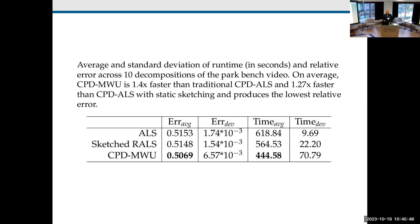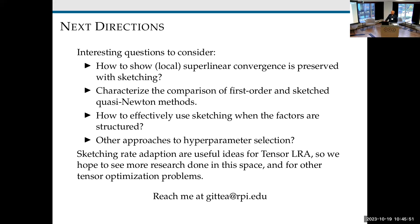The takeaway from the talk is those two things. Some interesting open questions: there's a gap in going from the second-order quasi-Newton update to a gradient update — can we show that at least local superlinear convergence is preserved when using sketching? We'd also like to compare the performance of first-order and sketched quasi-Newton methods.